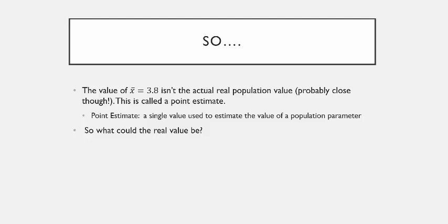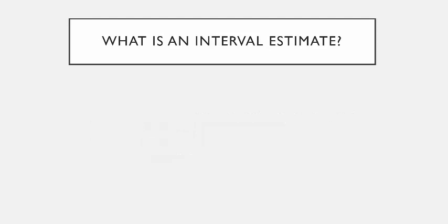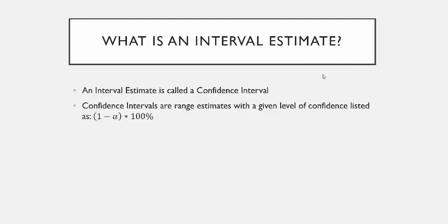A point estimate is a good single-value estimate, but it's probably not the real actual population mean. We can't ever know the real value — there's no way to talk to every single person who had SARS. So instead, we estimate the real population mean with what's called an interval estimate, which uses a range of values. We say the real mean could be anywhere between this number and this number. In statistics, this interval estimate is called a confidence interval — a range estimate with a given level of confidence.